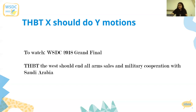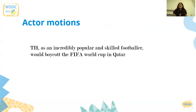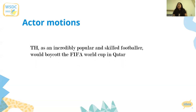The final type of motions under THBT motions are actor motions. Actor motions are usually phrased as 'This House As X Would Do Something' — there is always a defined actor. So the first thing you should do when you get an actor motion at a tournament is ask yourself: what are the incentives of this actor, what are their motivations, what is likely to drive them, and what are the things this actor is likely to care about?